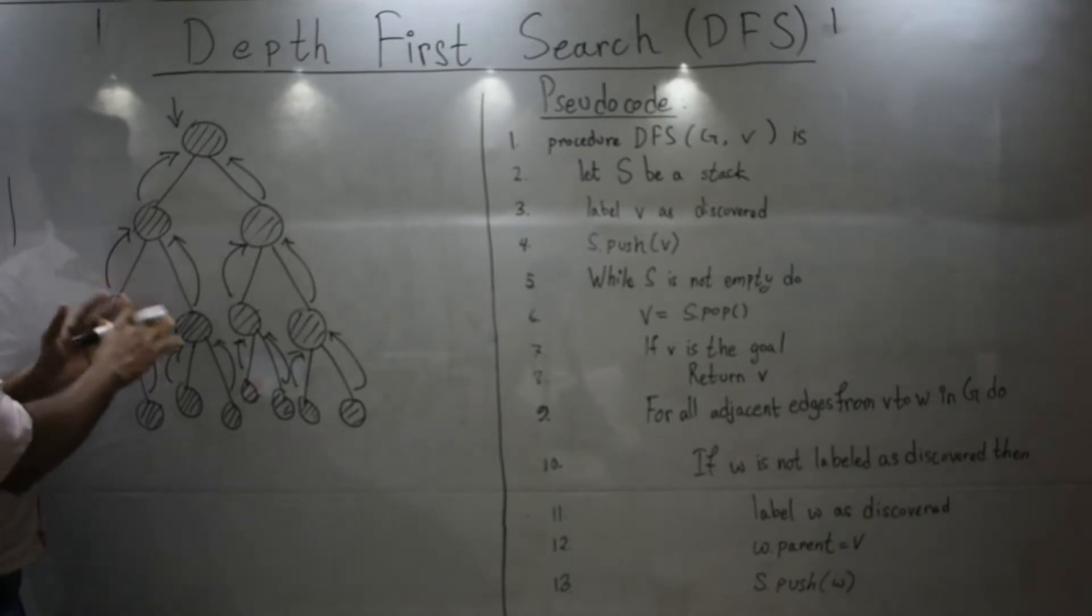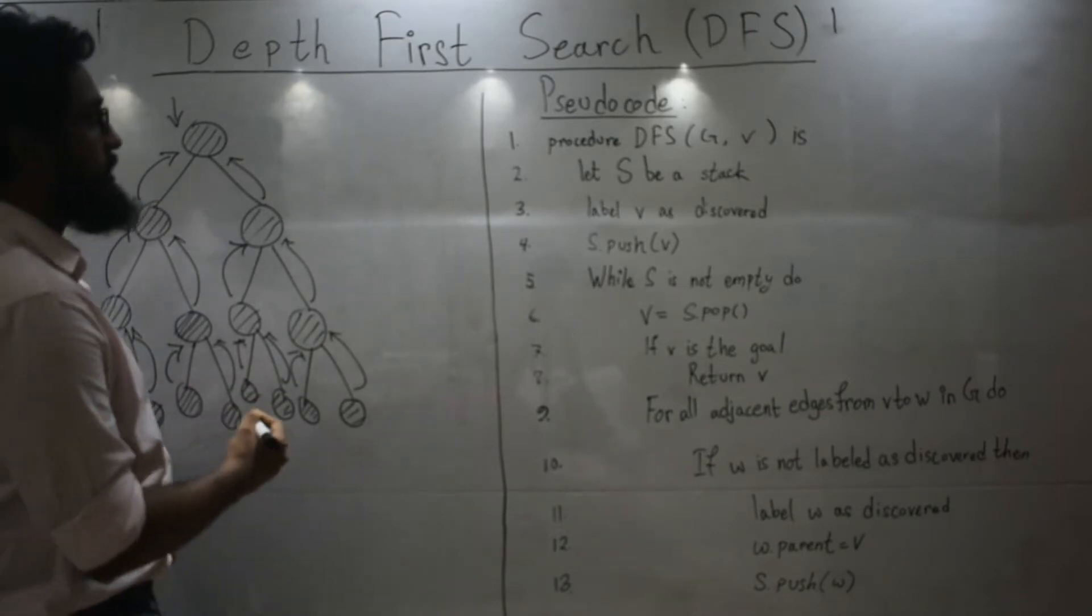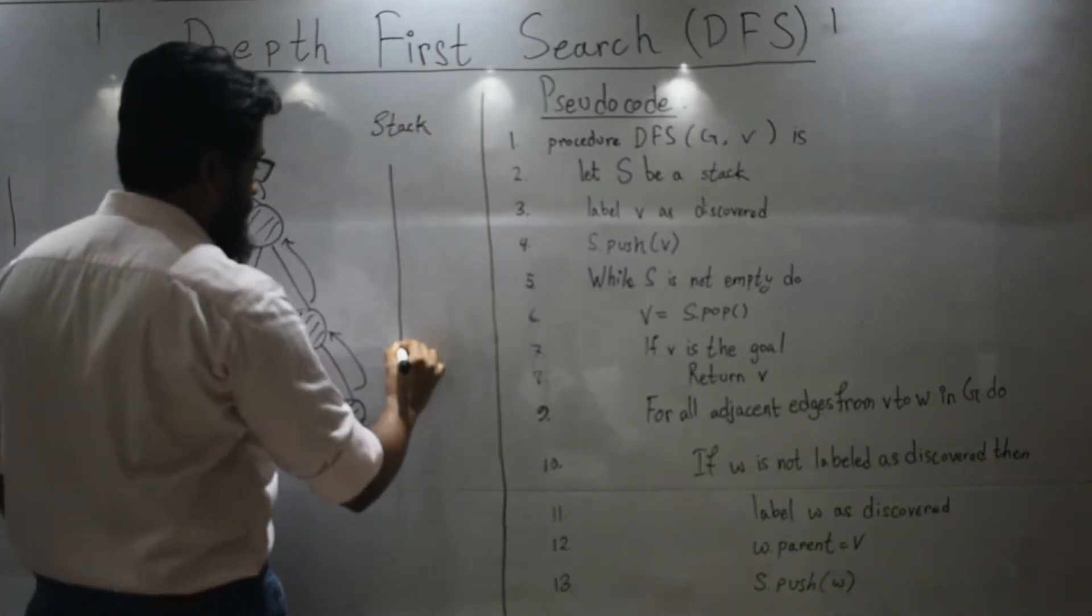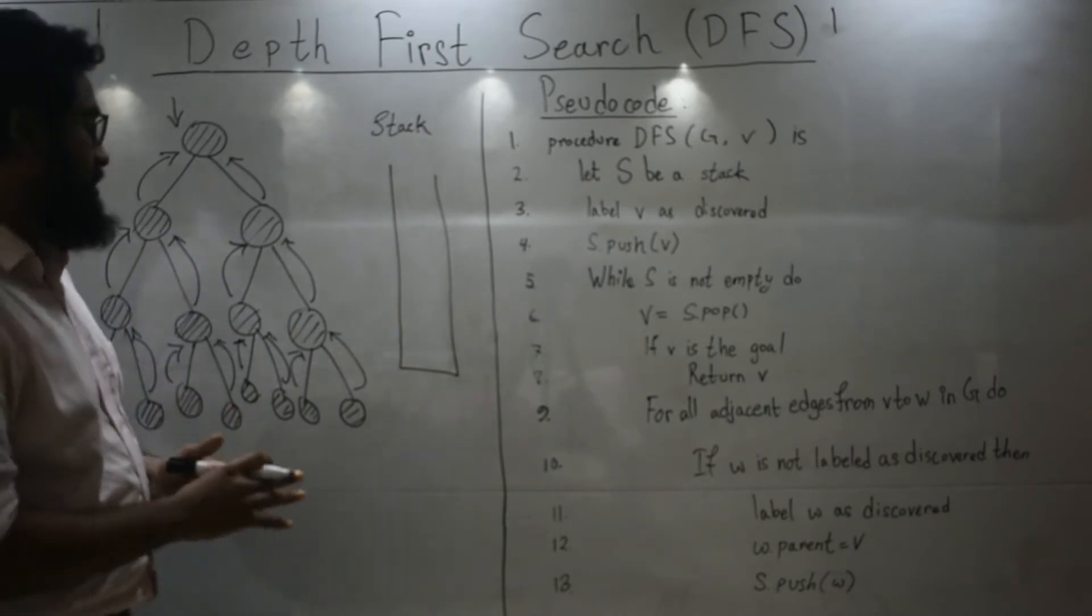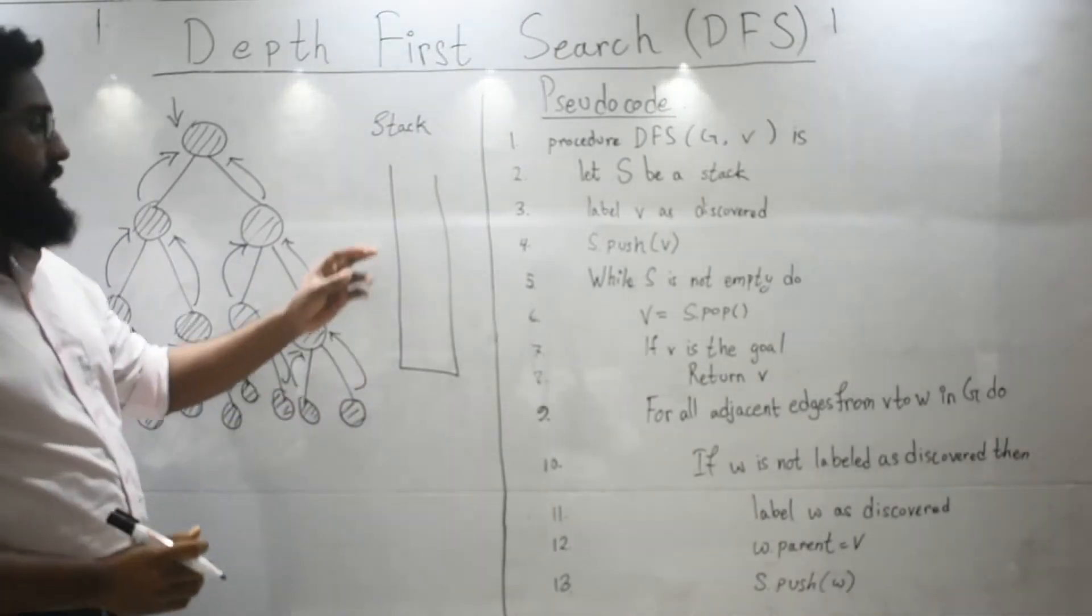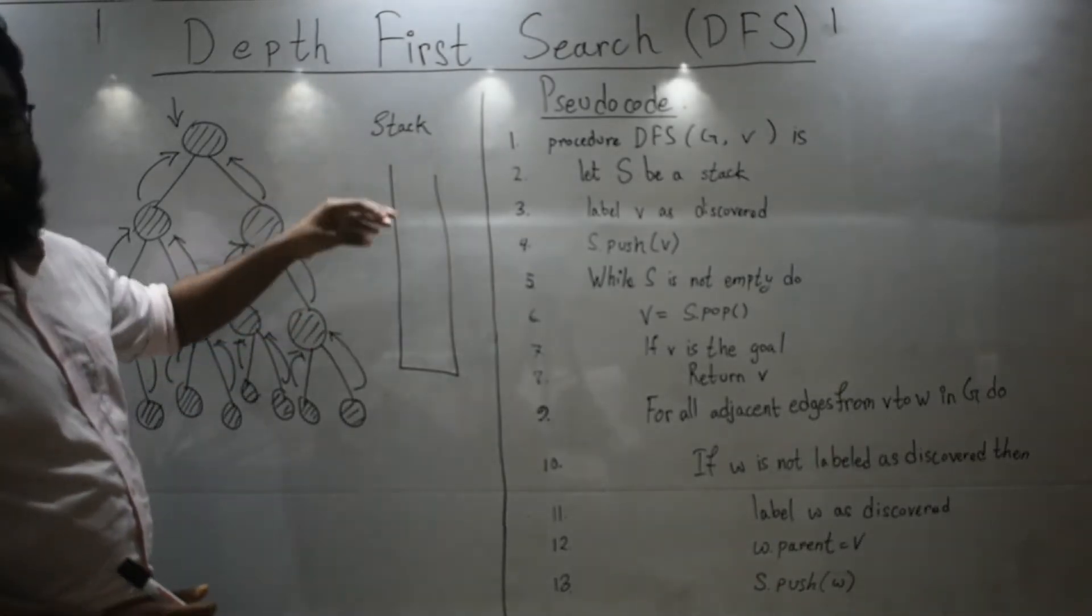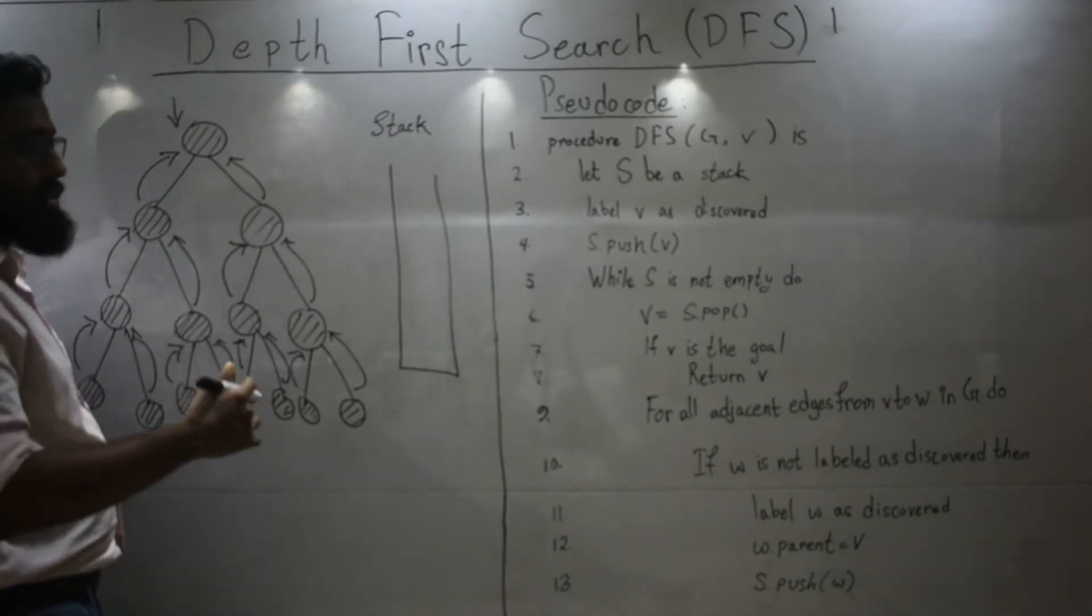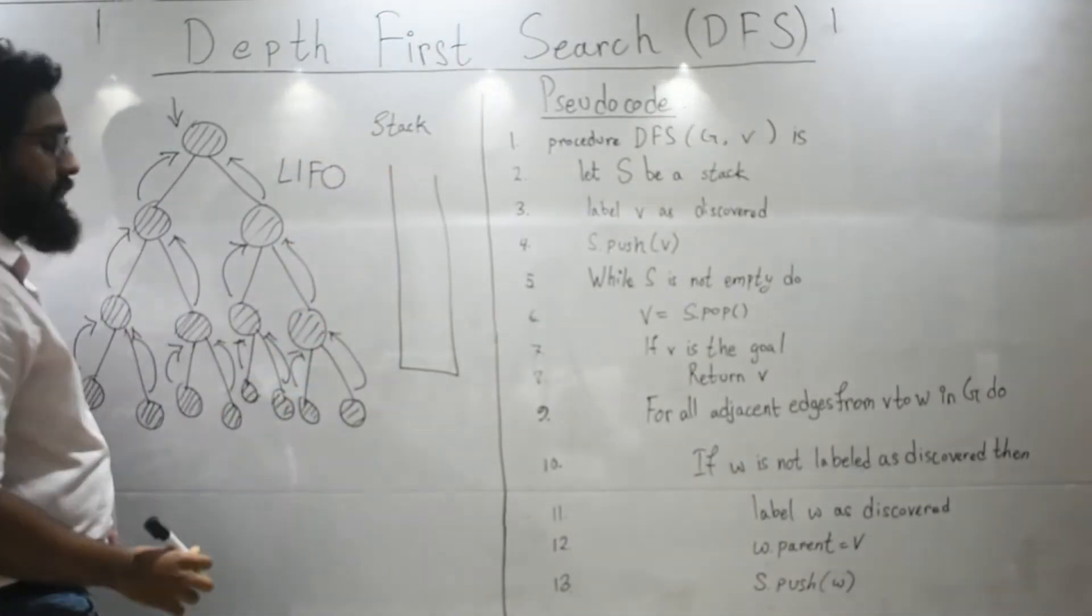To try to solve this, we will use a kind of data structure known as a stack. So what is a stack? It's a kind of data structure where once you insert something and then followed by another thing, once you try to take them out, it will follow a last in first out principle. Last in first out. LIFO.